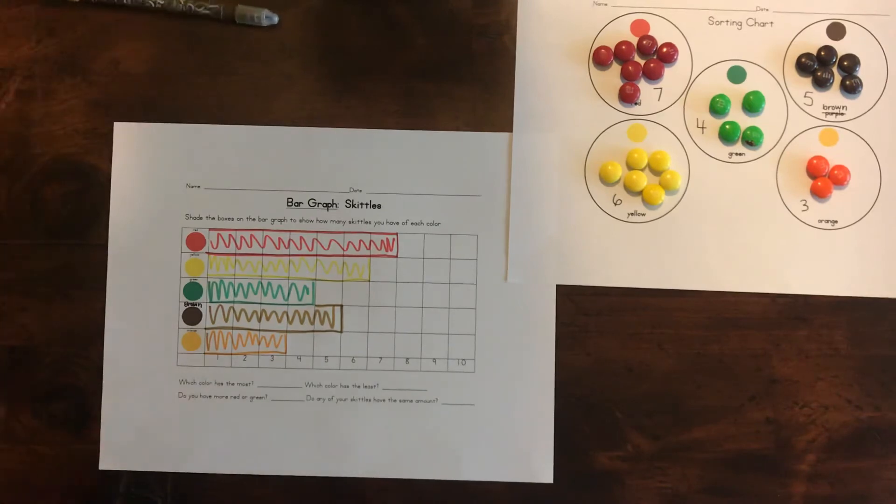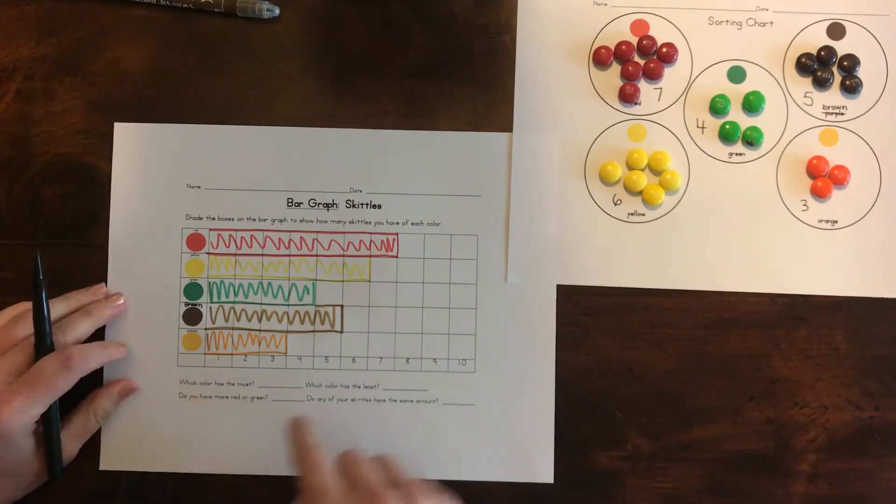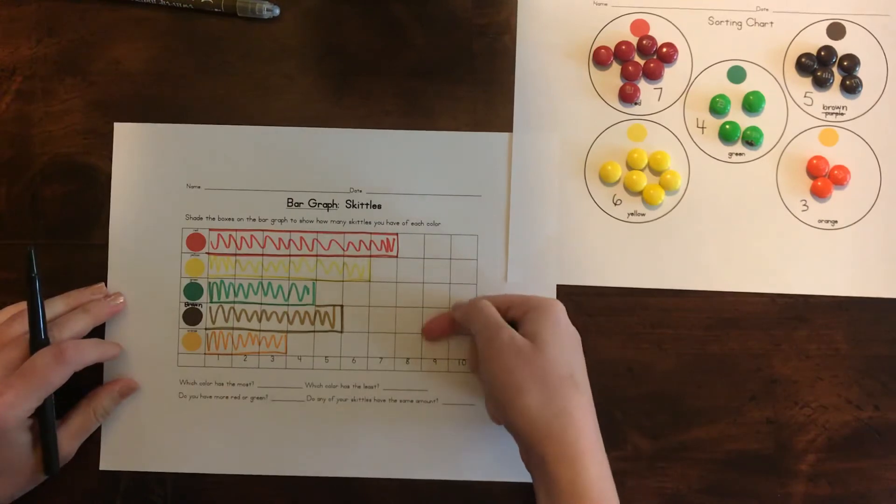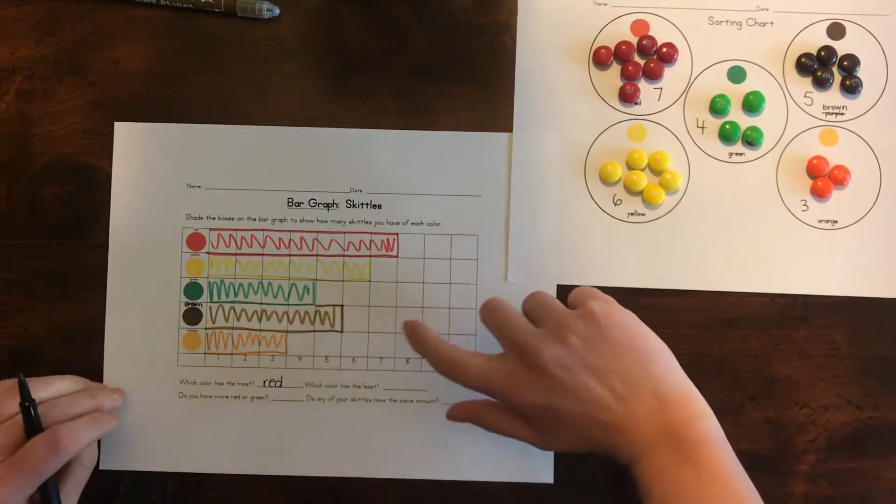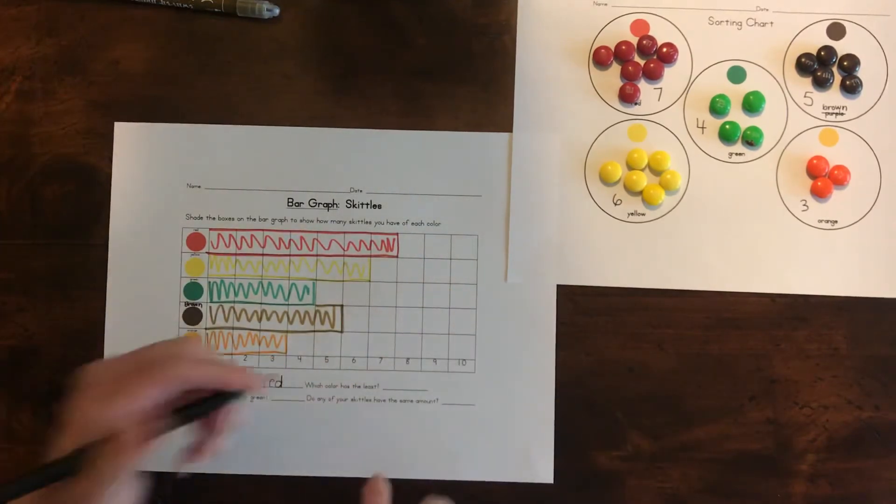We have some questions at the bottom of this one. Which color has the most? Well, we can see again that red has the highest bar, right? And the least. We can see that orange is the smallest.